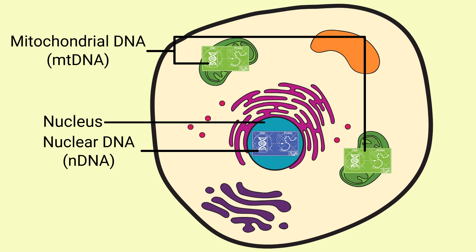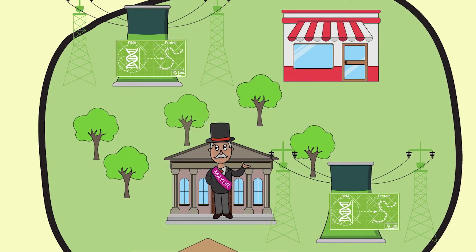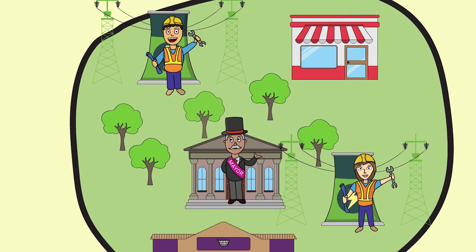Working together with the nuclear DNA, they code for all the parts of the mitochondria. You can think of nuclear DNA as the town's mayor, and mitochondrial DNA as the engineers for the power plant.